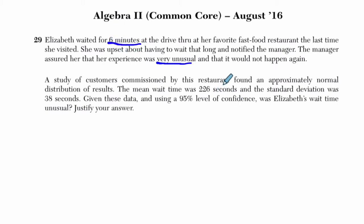Six minutes. A study of customers commissioned by this restaurant found an approximately normal distribution of results. This is pretty typical on Algebra 2 tests - you're going to see a normal distribution kind of question. The mean wait time was 226 seconds, and the standard deviation was 38 seconds. So we're given all this time here in seconds.